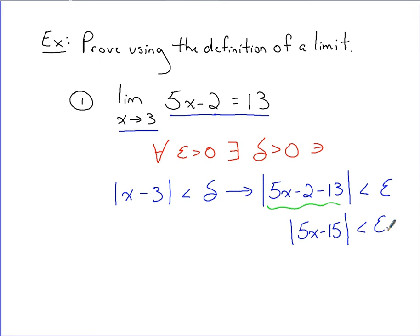We recall that at this point, something should factor. So if we take a greatest common factor of 5 out, we've got the absolute value of x minus 3 left. That is less than epsilon.